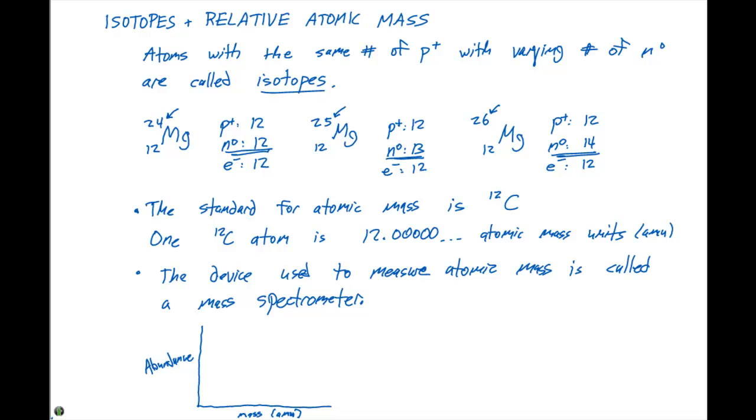So if this were carbon, we would have a mass of 12, a mass of 13, and a mass of 14 on our x-axis, and what we would typically see is a graph that looks something like this.